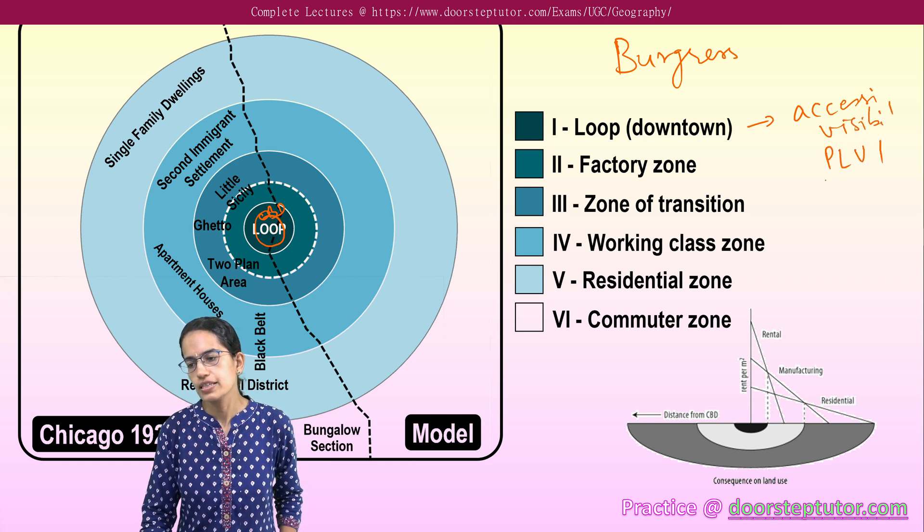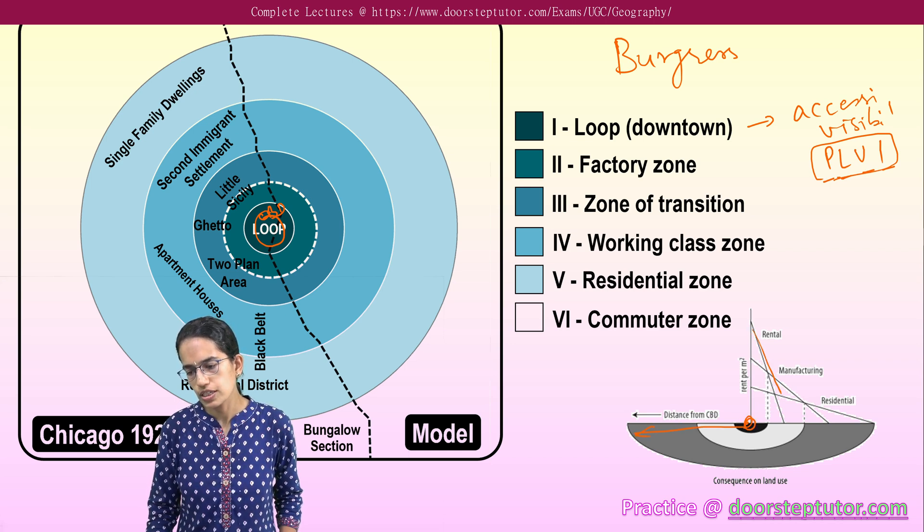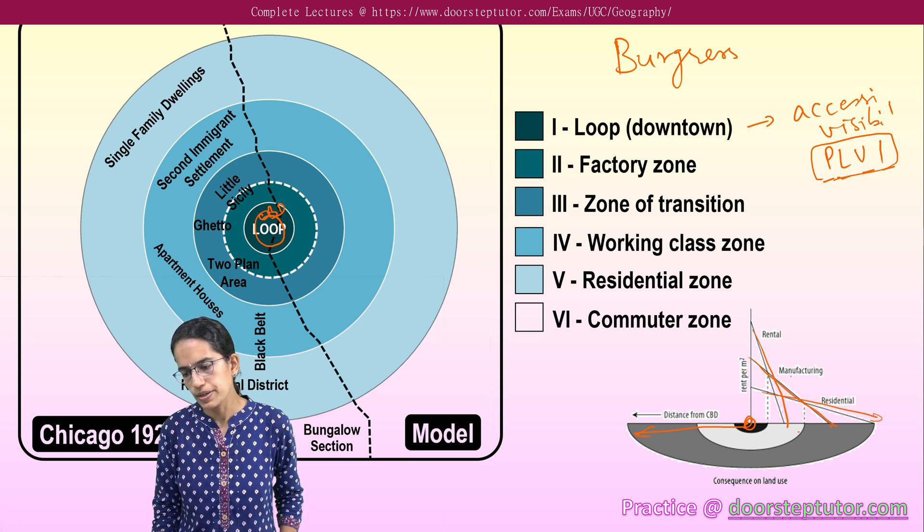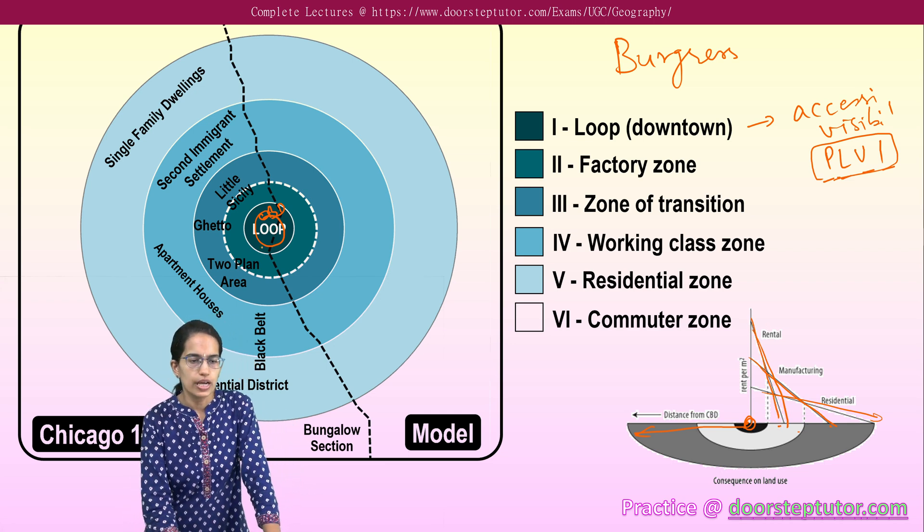There is PLVI, the peak land value intersection which is found here. If we talk about the distance from the central business district, the rent would significantly decrease. Rent for the residential declines very steeply for the manufacturing and for the retail purpose.